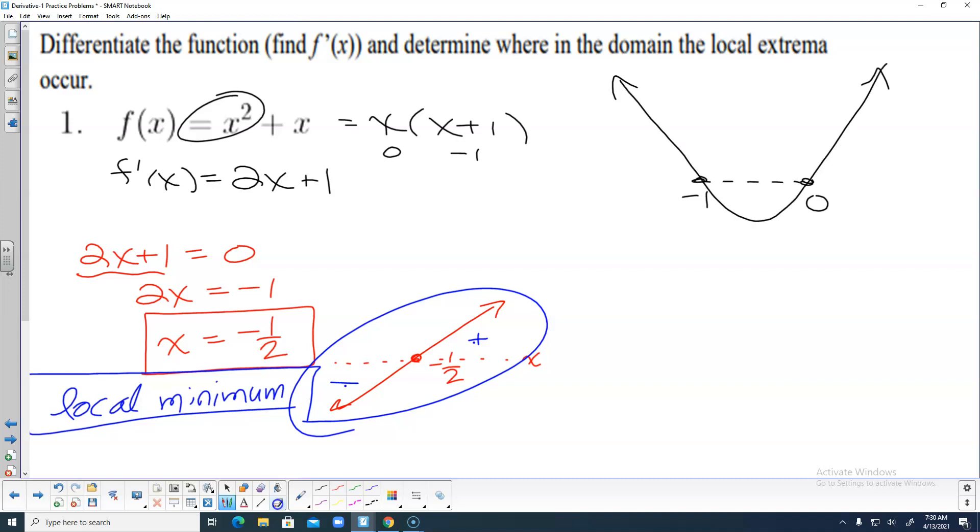Because it's a parabola, guess where the vertex is? Halfway between the roots. Halfway between negative 1 and 0 is negative 1 half. Then we plug negative 1 half in. Negative 1 half plus 1 is positive 1 half. Multiply those, we get negative 1 fourth. This verifies what I saw there. Calculus is cool.